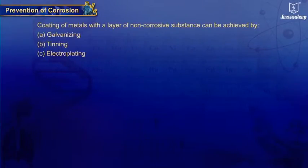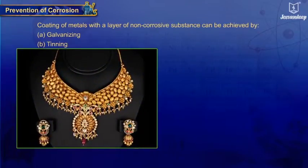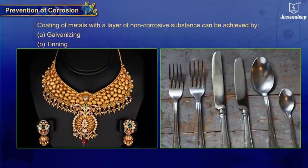(c) Electroplating - this method involves coating of a metal with another metal, for example gold-plated jewelry, silver-plated cutleries, etc.